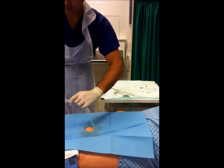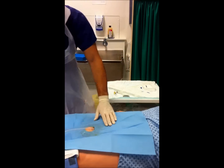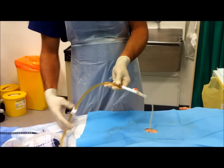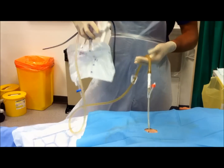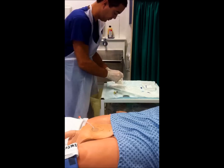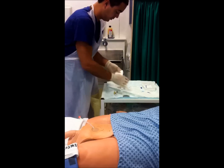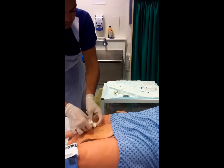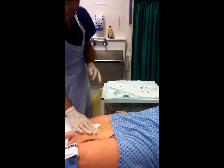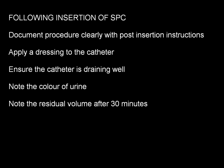Connect the catheter to a catheter bag or urometer. Remember to open the clamp and place the bag on the floor. Remember to document your procedure fully and note the colour of the urine and the residual volume after 30 minutes.